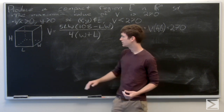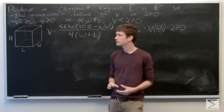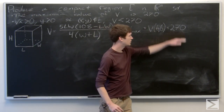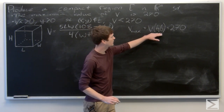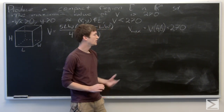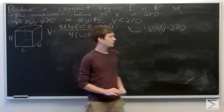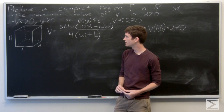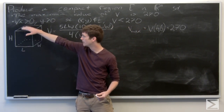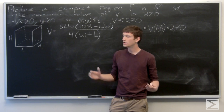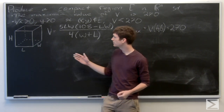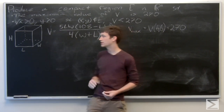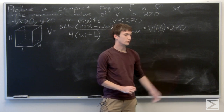We want to produce a compact region such that we know that 270 is our maximum. That means we have to have the point (6, 6) within our compact region, because then the first part is satisfied. We also want to find a region so that for any (x, y) combination outside of our region, we know for sure that the volume is not going to be 270.